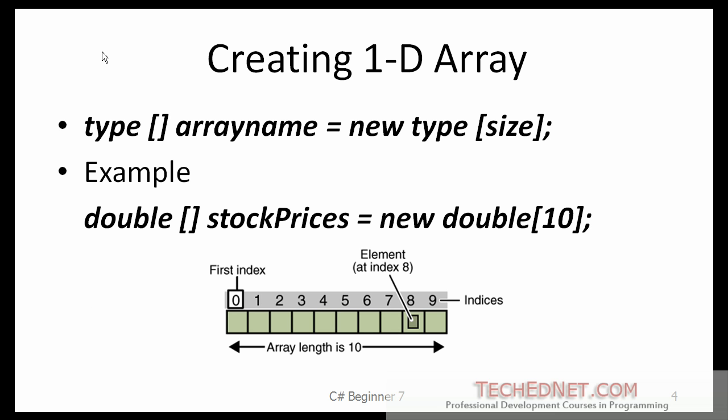Here is an example of creating a 1D array. Type is the base type, the type of data that the array will hold. The size is the size of the array, the number of elements the array will hold. The new keyword builds the array and allocates the required memory. Once the array is created, its length is going to be fixed.